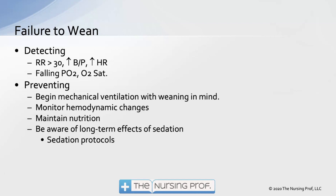Failure to wean is another complication. We detect it by seeing an increase in respiratory rate, blood pressure, and heart rate, and a falling PO2 and O2 saturation when trying to wean. To prevent failure to wean, begin mechanical ventilation with weaning in mind — use the least amount of ventilation needed and start weaning as soon as the patient is hemodynamically stable. Monitor for hemodynamic changes, maintain nutrition — there's a correlation between albumin levels and failure to wean — and be aware of long-term sedation effects.